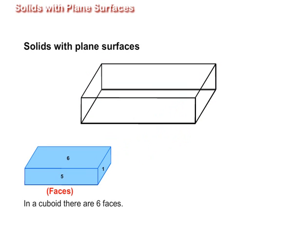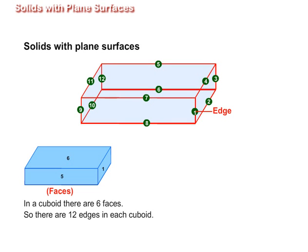The two faces of a cuboid meet at the edge. So, there are 12 edges in each cuboid.